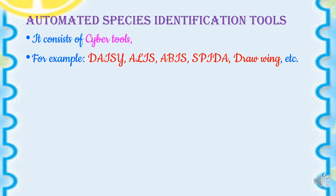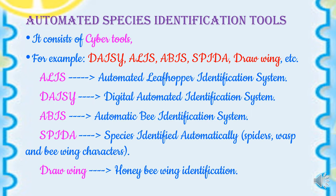The full forms of these cyber tools are: ALIS — Automated Leafhopper Identification System; DAISY — Digital Automated Identification System; ABIS — Automatic Bee Identification System; SPIDA — Species Identification Automatically; and DRAWWING — honey bee wing identification. These are some of the cyber tools used as taxonomical tools.